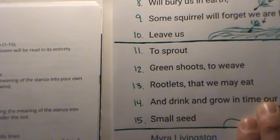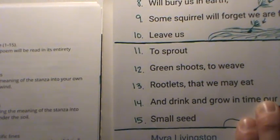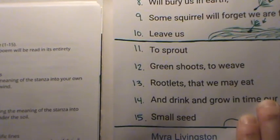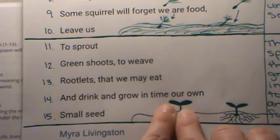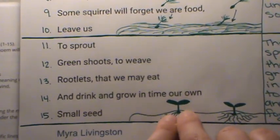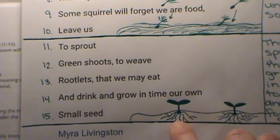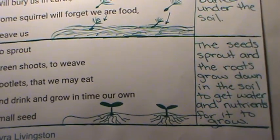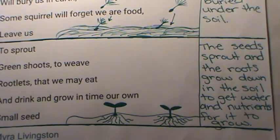If that wasn't enough time, go ahead and pause the video now. Here is what illustration I put and what sentence I wrote as the example. It starts to sprout green shoots, it weaves rootlets, it eats and drinks and grows, and then it will grow its own seed. My sentence says: the seeds sprout, and the roots grow down in the soil to get water and nutrients for it to grow.